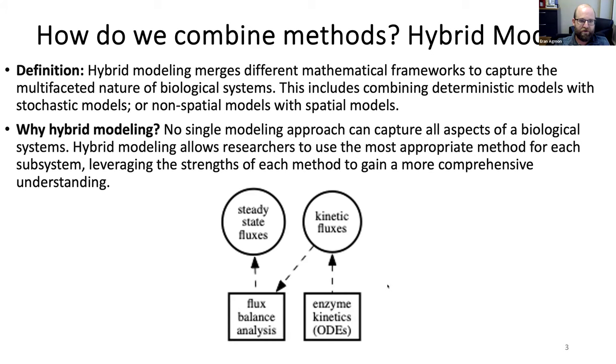I have a definition here. Hybrid modeling merges different mathematical frameworks to capture the multifaceted nature of biological systems. So you may combine deterministic with stochastic. We saw this done spatially by Jim. You might want to capture, you might want to do non-spatial models for some subsystems, combine that with spatial models. So why? Well, again, no single modeling approach can capture all of biology. So thus far, I'm not sure it ever will. So we need frameworks that allow us to combine and gain the more comprehensive understanding.